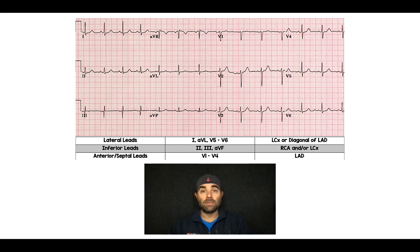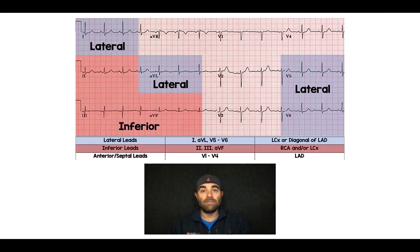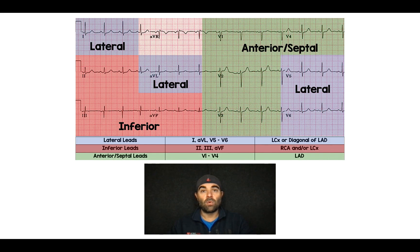For example, if you look at 1, AVL, V5, and V6, these are going to be your lateral leads. If you look at 2, 3, and AVF, these are going to be your inferior leads. And then if you look at V1 to V4, these are going to be your anterior septal leads.